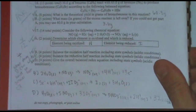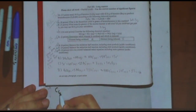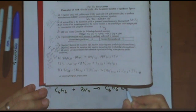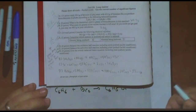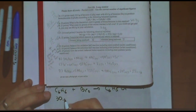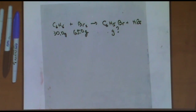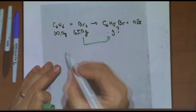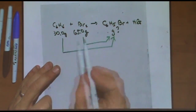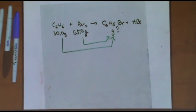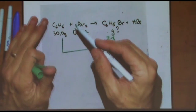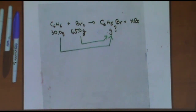Let me write the reaction down. The reaction is C6H6 plus Br2 — is it balanced? I think so. So 30 grams and 65 grams produced. What's the yield? For part A, I want to know the mass. How do I know this is a limiting reactant problem? When you're given information about more than one reactant, it has to be, because you can do the stoichiometry starting from either molecule. So you actually have to do both stoichiometry calculations.